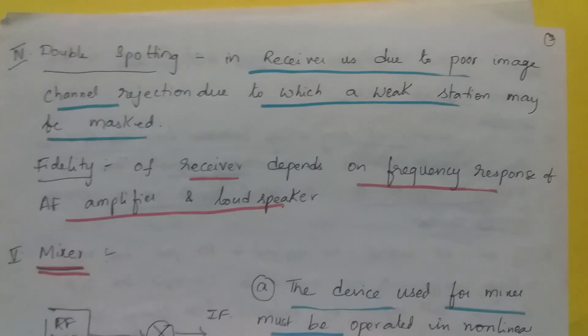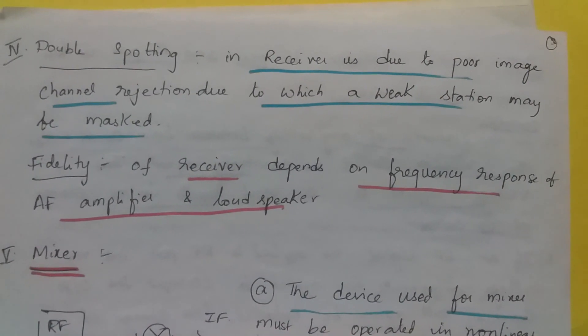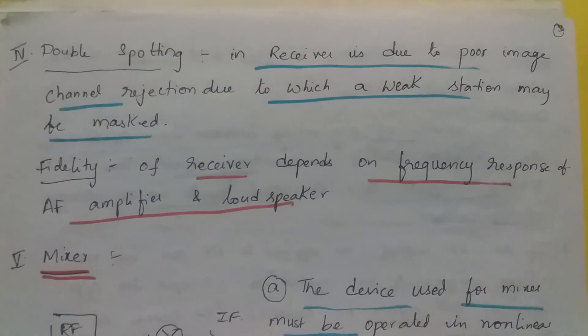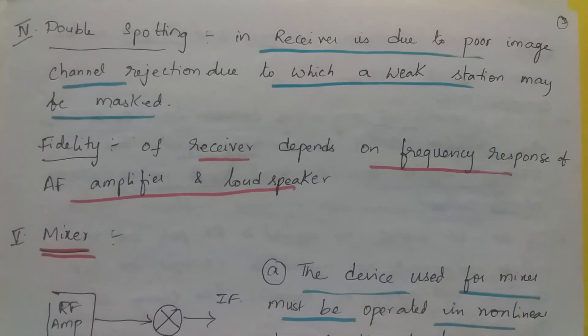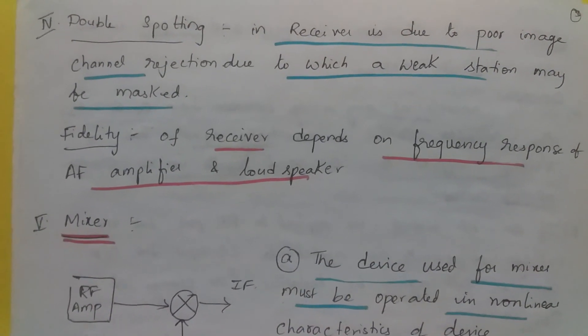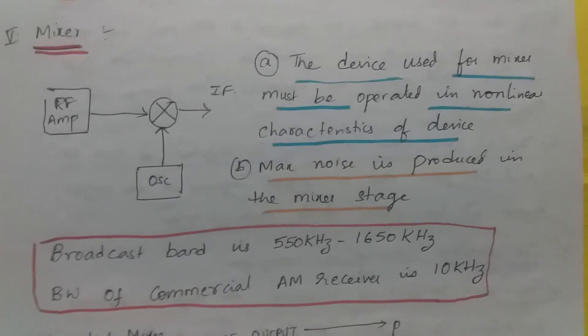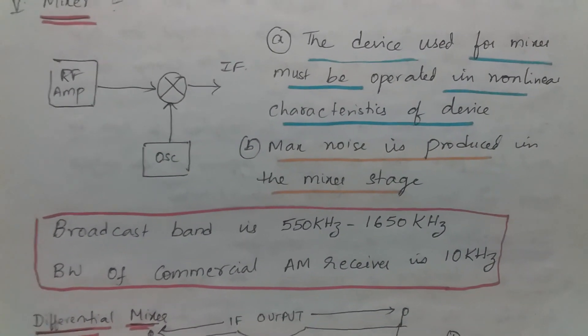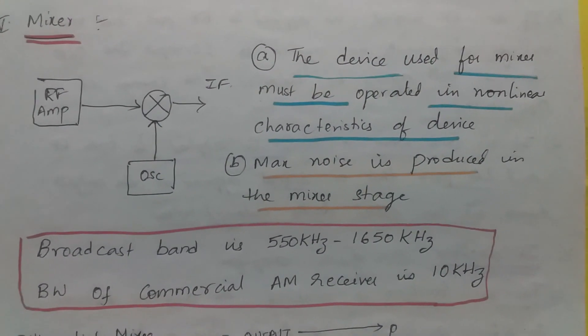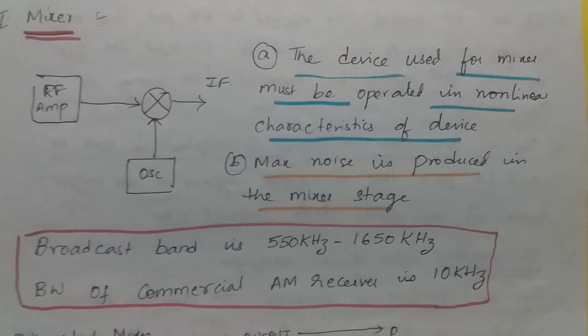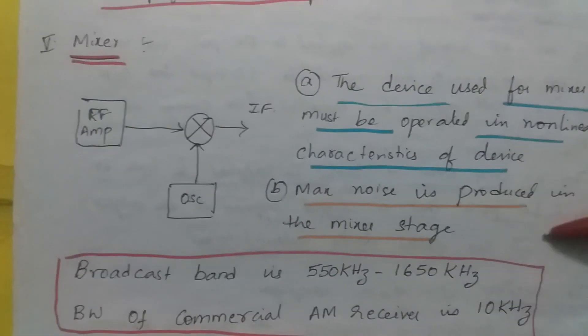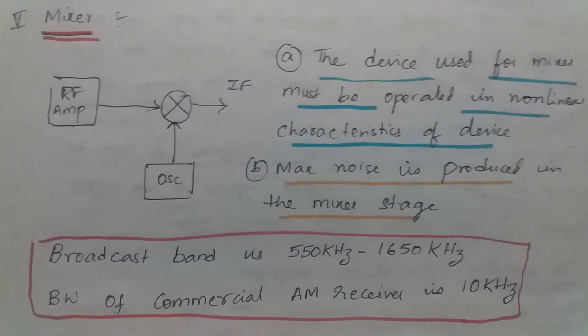Let's discuss some more properties. Double spotting in receiver is due to poor image channel rejection due to which a weak station may be masked. If we are not able to reject the image channel, the original station which is weak will be masked. Fidelity of receiver depends on frequency response of AF amplifier and loudspeaker. Mixer is that stage where output is the difference of RF amplifier and oscillating frequency. The device used for mixer must be operated in non-linear characteristics. Since it is operating in non-linear region, maximum noise is produced. Broadcasting range is 550 kilohertz to 1650 kilohertz and bandwidth of commercial AM receiver is 10 kilohertz.